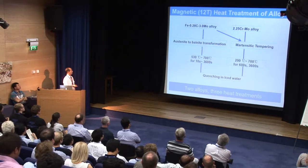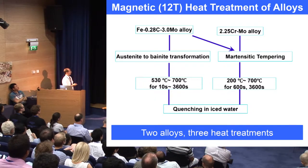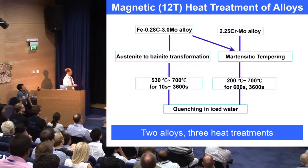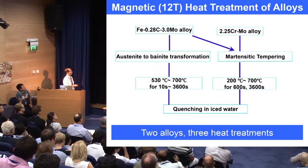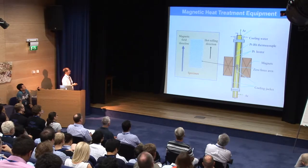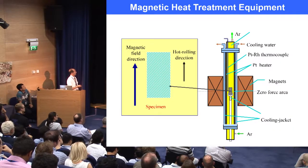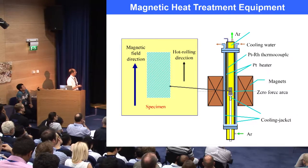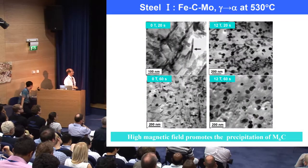In this work, we have two alloys. One is a molybdenum alloy and another is a chromium-molybdenum alloy. For the molybdenum alloy, we have two heat treatments: one is from austenite to bainite transformation and another one is martensitic tempering. For the chromium-molybdenum alloy, we use one heat treatment for martensitic tempering. This slide shows the equipment for magnetic heat treatment. The specimen is here, and the heat treatment direction of the specimen is parallel to the magnetic field direction.